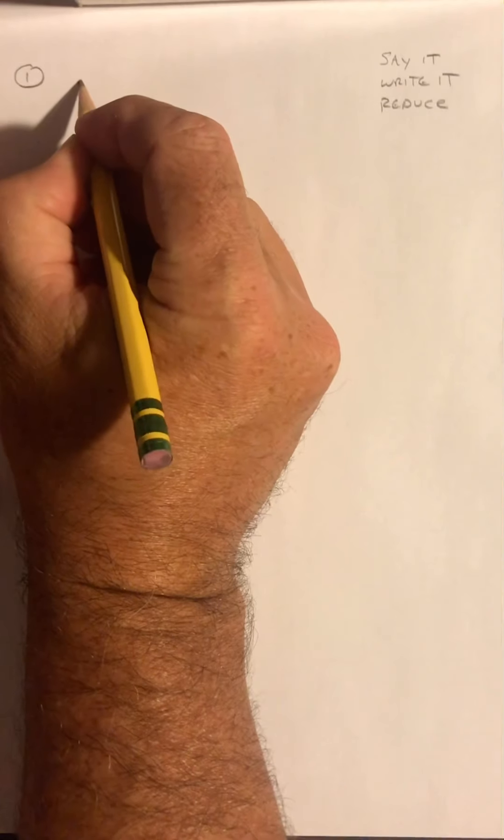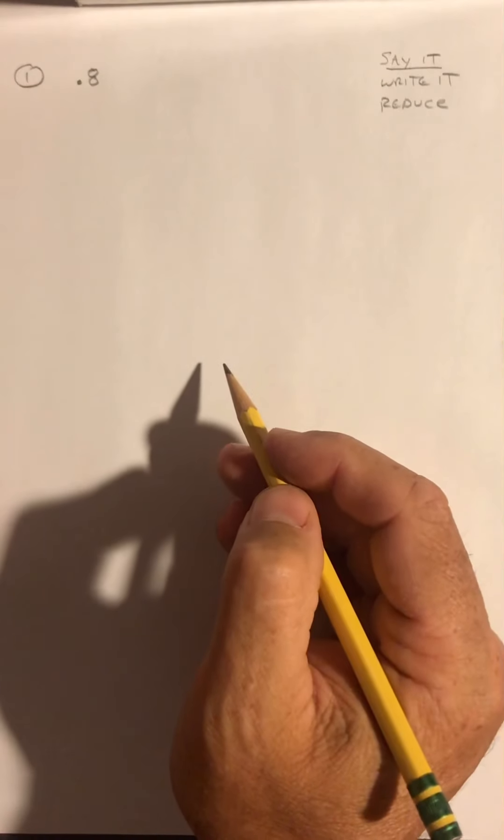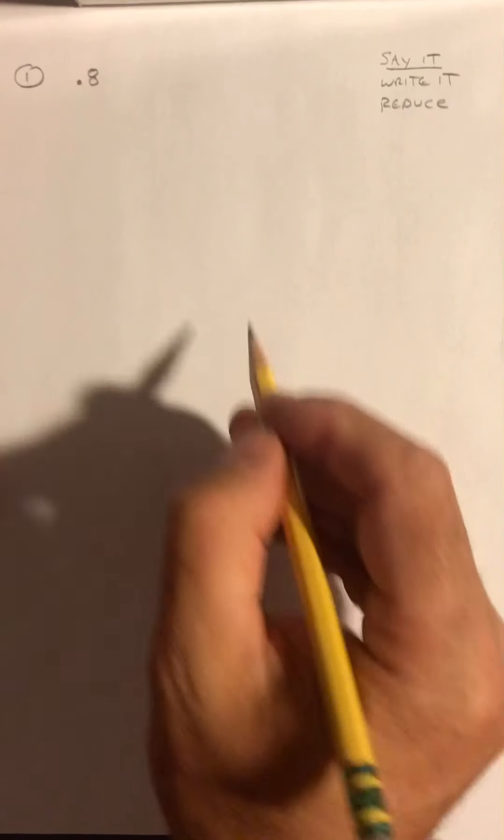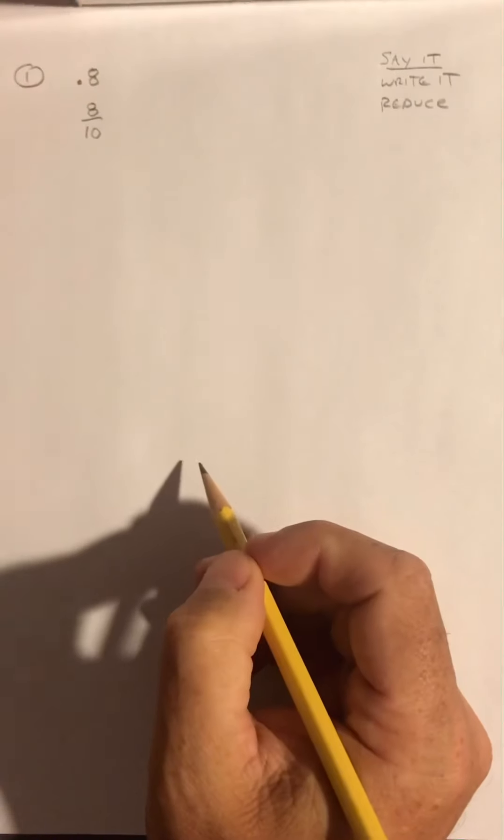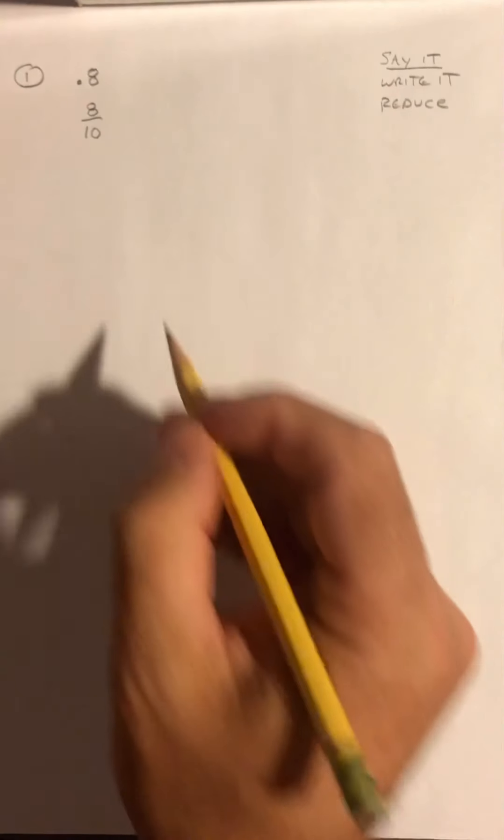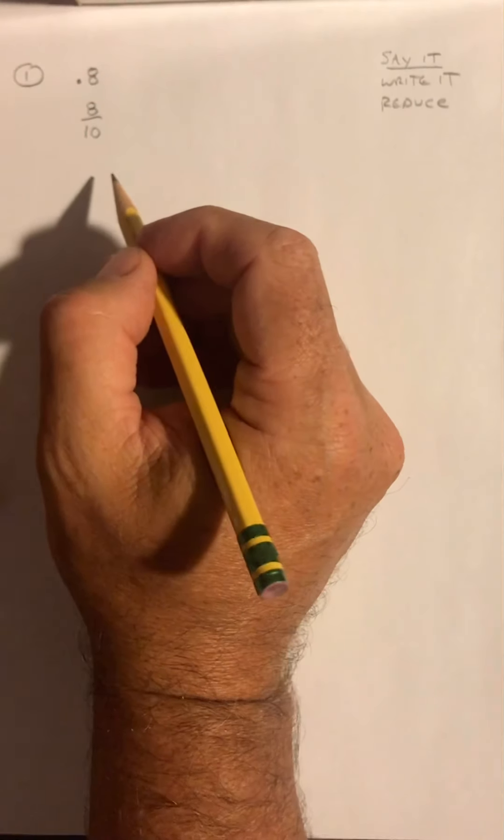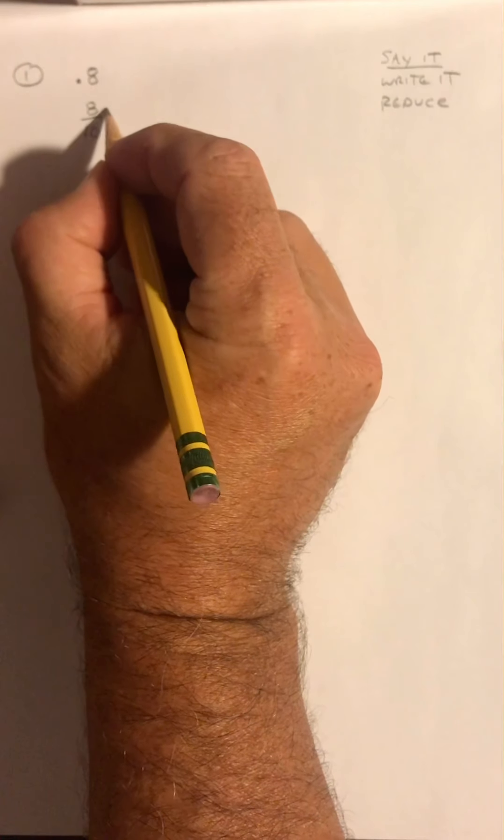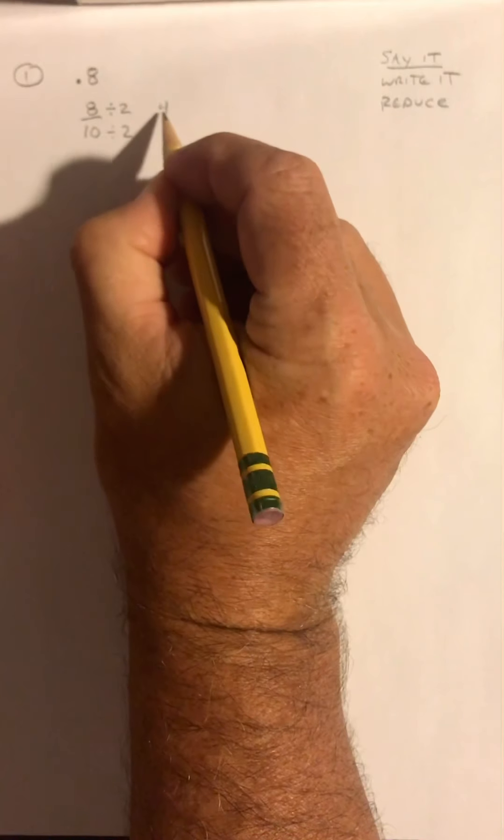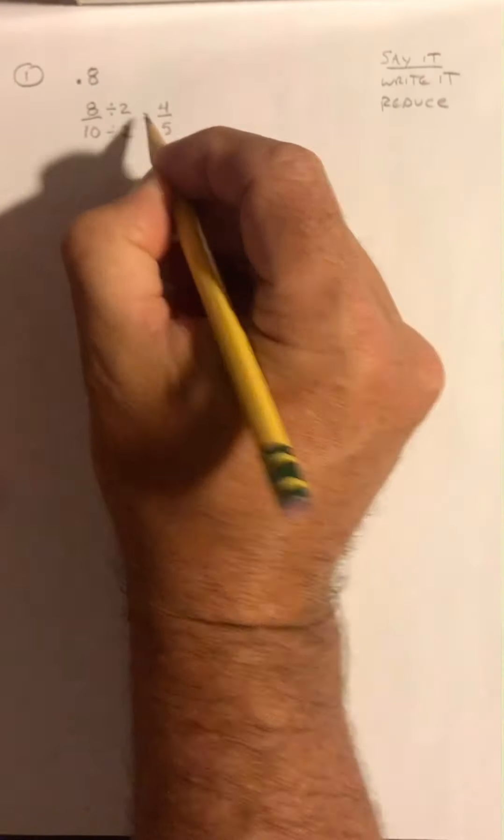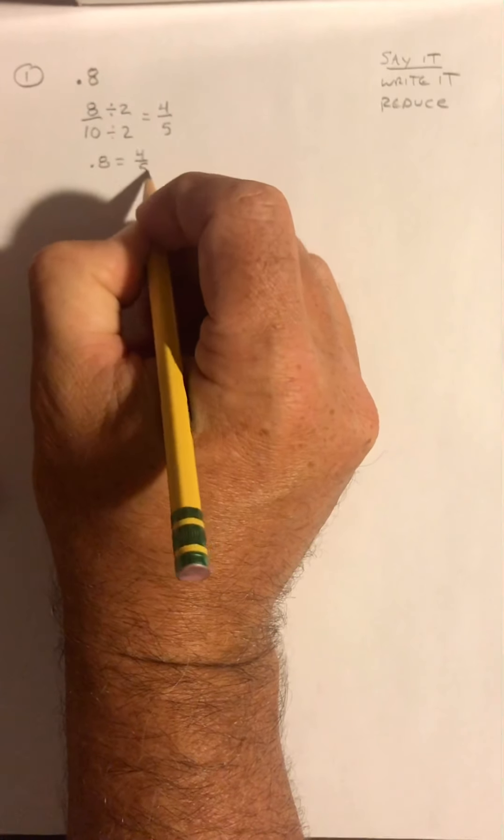Example number one. Let's take the decimal 0.8. We're going to say it the correct way: 8 tenths. We're going to write it exactly the way that we just said it, 8 tenths, and then we're going to reduce it. The way we reduce it is we find a factor that goes into both the numerator and the denominator. In this case, our best choice is 2, so I'm going to divide both the top and bottom by 2. I get 4 fifths, so 0.8 equals 4 fifths.